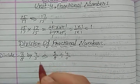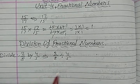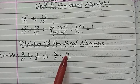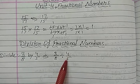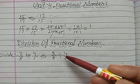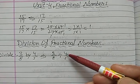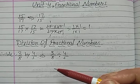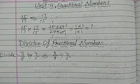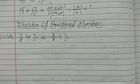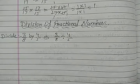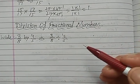You can see here that 4 upon 5 is our divisor. We have to divide 3 upon 8 by 4 upon 5. What we have to do is convert this division sign into multiplication sign.